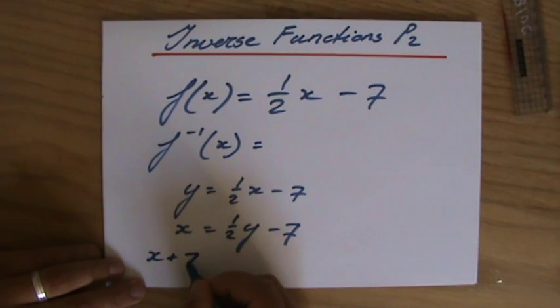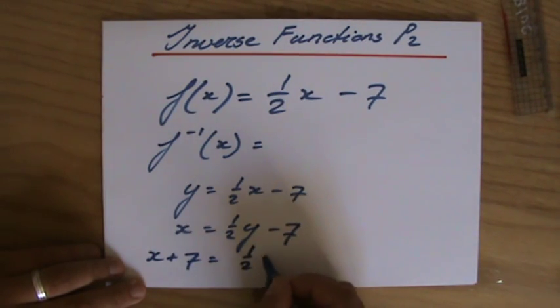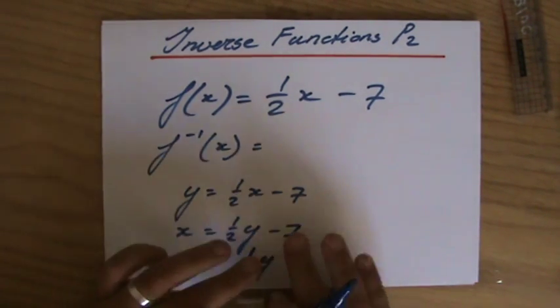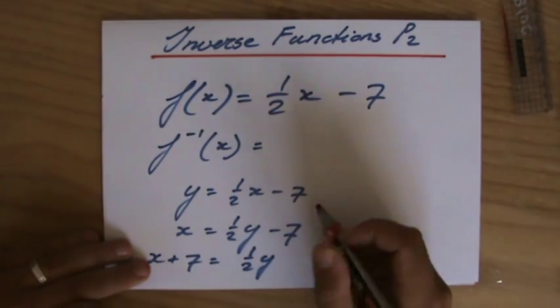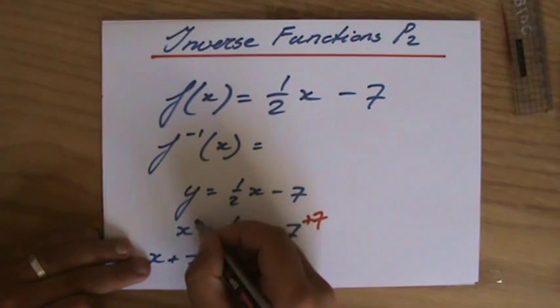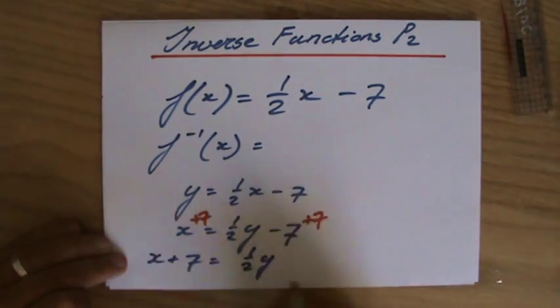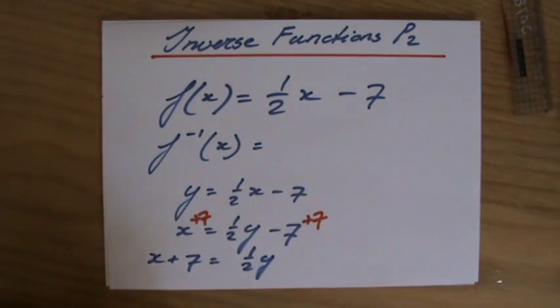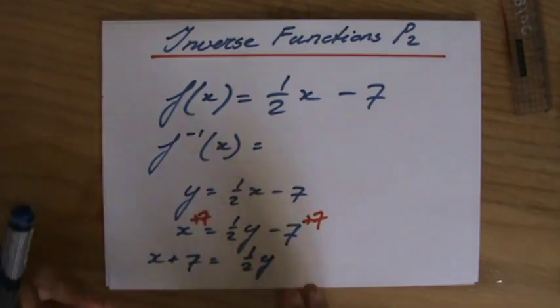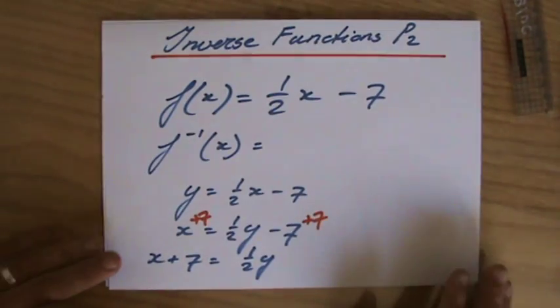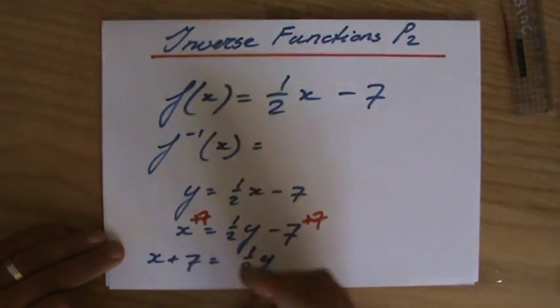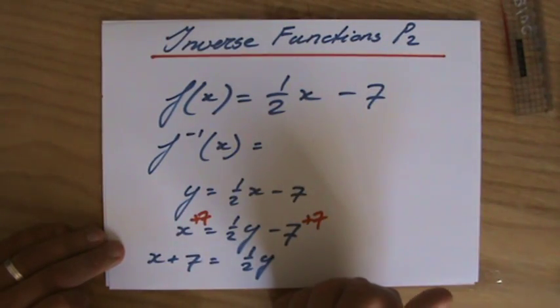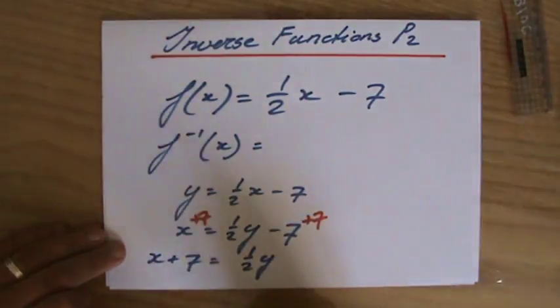So x + 7 equals (1/2)y. The minus 7 becomes plus 7 here to get rid of it, so plus 7 on the left side of the equal sign for it to be equal. And to get rid of a half, because you want to know what 1y equals, not so much half y, you can divide both sides by the coefficient. So divide both sides by a half, which is the same as multiplying both sides by 2.